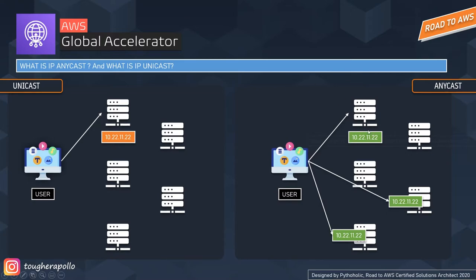With anycast, you can have multiple servers in multiple locations sharing the same IP addresses. The algorithm chooses the server closest to you to deliver traffic to, improving latency, performance, and reliability — it's less prone to DDoS attacks and failover is seamless. Anycast sounds better in every way, and it is — but the only pain point is the huge cost of infrastructure. You don't have to worry about this because AWS handles it for you, and as with any AWS service, you pay for what you use.